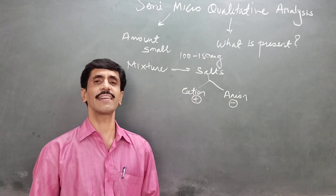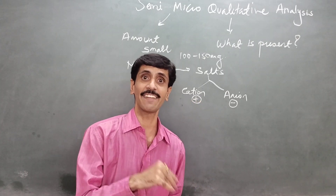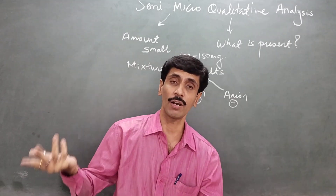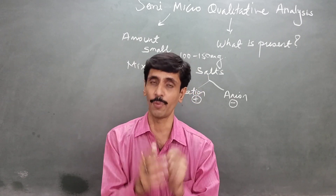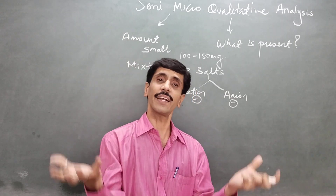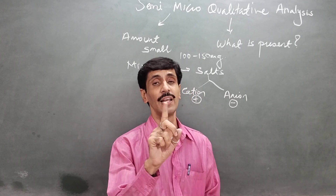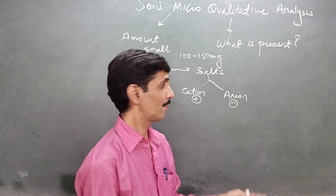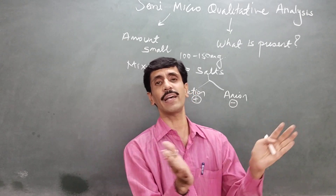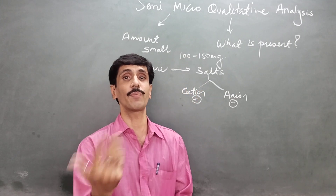Now, when I talk about cations and anions, we generally ignore H⁺ ions in the cation part. This comes under inorganic chemistry. Under inorganic chemistry, if H⁺ ions are present, it is not a salt — it becomes an acid. Similarly, in the anion part, we give one exception: OH⁻, hydroxide ions, because if hydroxide ions are present, then it becomes a base.